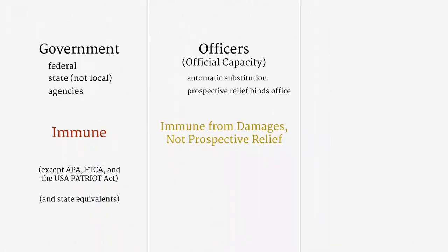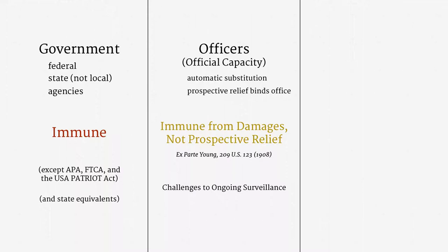Under the Constitution, a government officer sued in their official capacity is immune from damages. They are not, however, immune from prospective relief. A plaintiff can still seek an injunction, and can still seek a declaration of rights. That distinction arises from Ex parte Young, a case from over a century ago which is still good law. So official capacity claims are a critical tool for challenging ongoing surveillance programs.